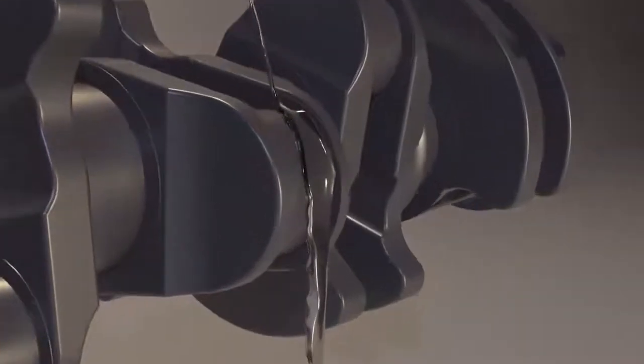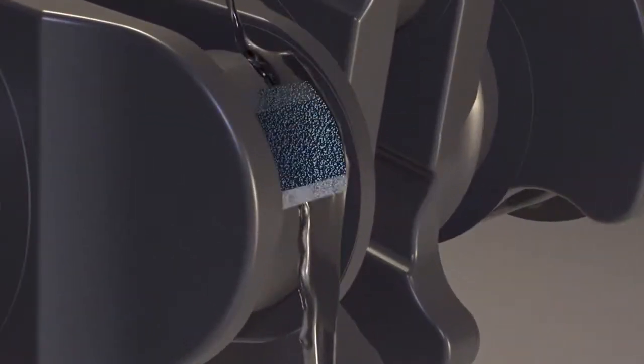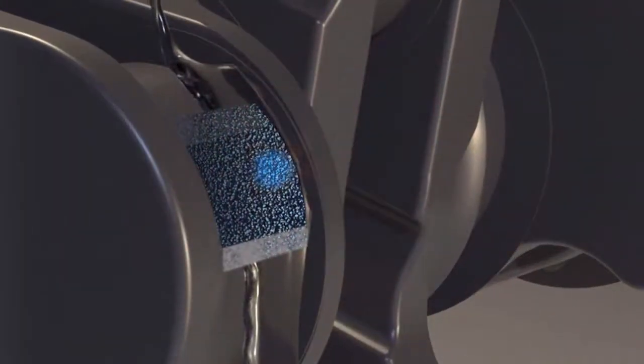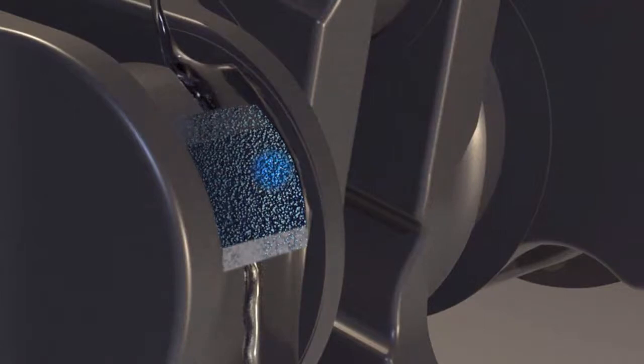what laser peening is doing to the metal deep under the surface. Here is a close-up view of a metal surface and the granular metal structure below. The water forms an overlay that is transparent to the laser beam. The laser beam passes through the water to the surface of the metal. When the laser pulse hits the metal surface,